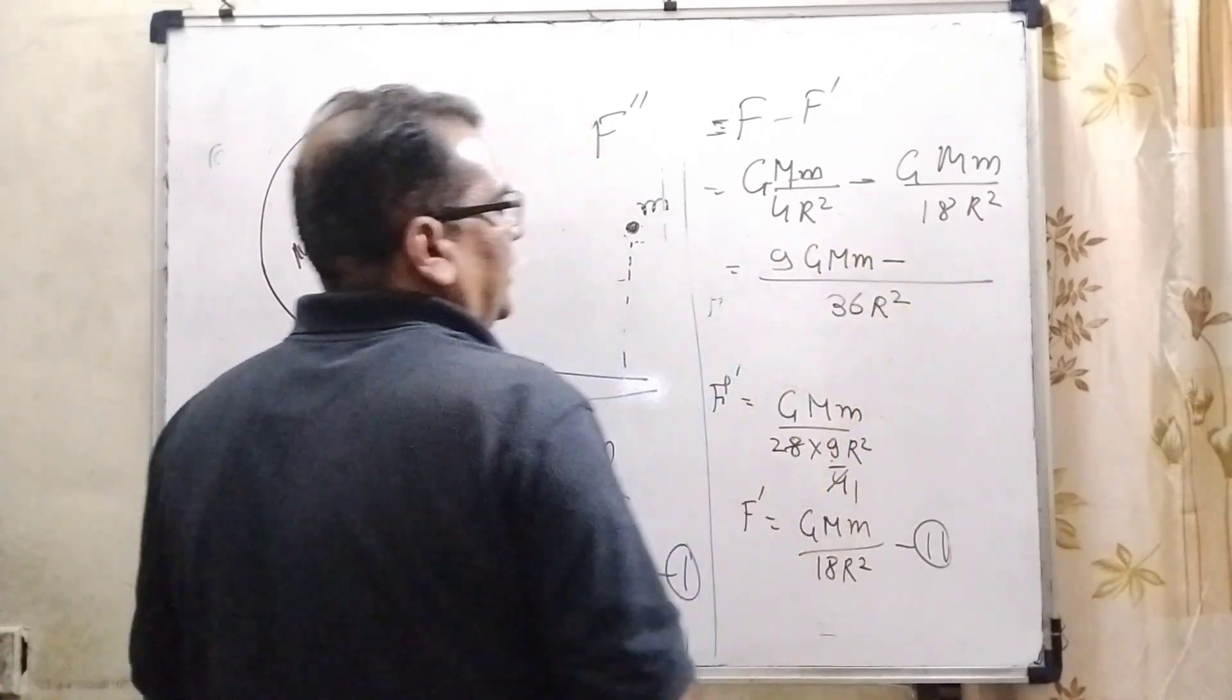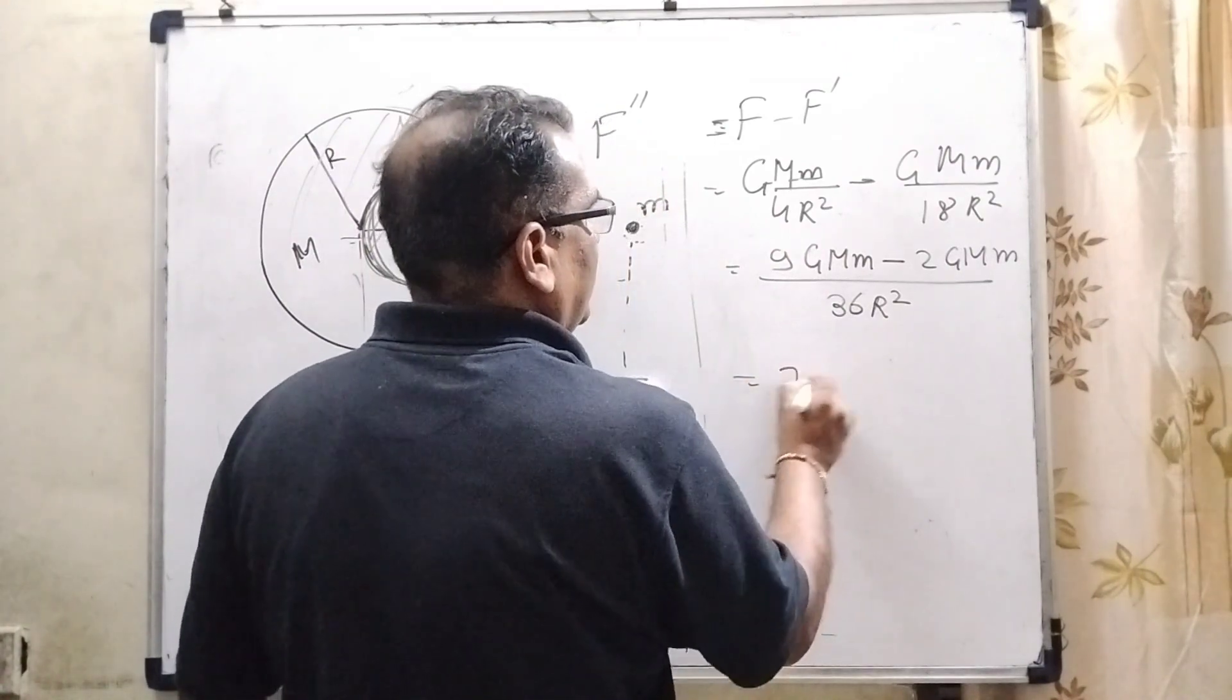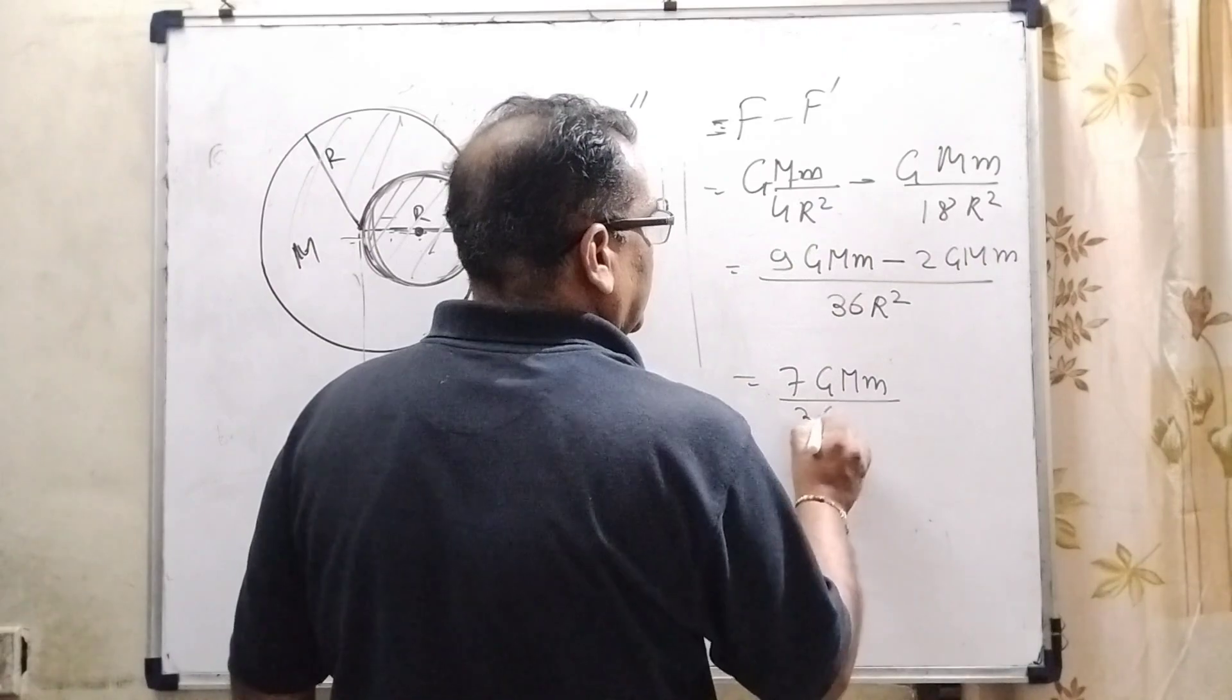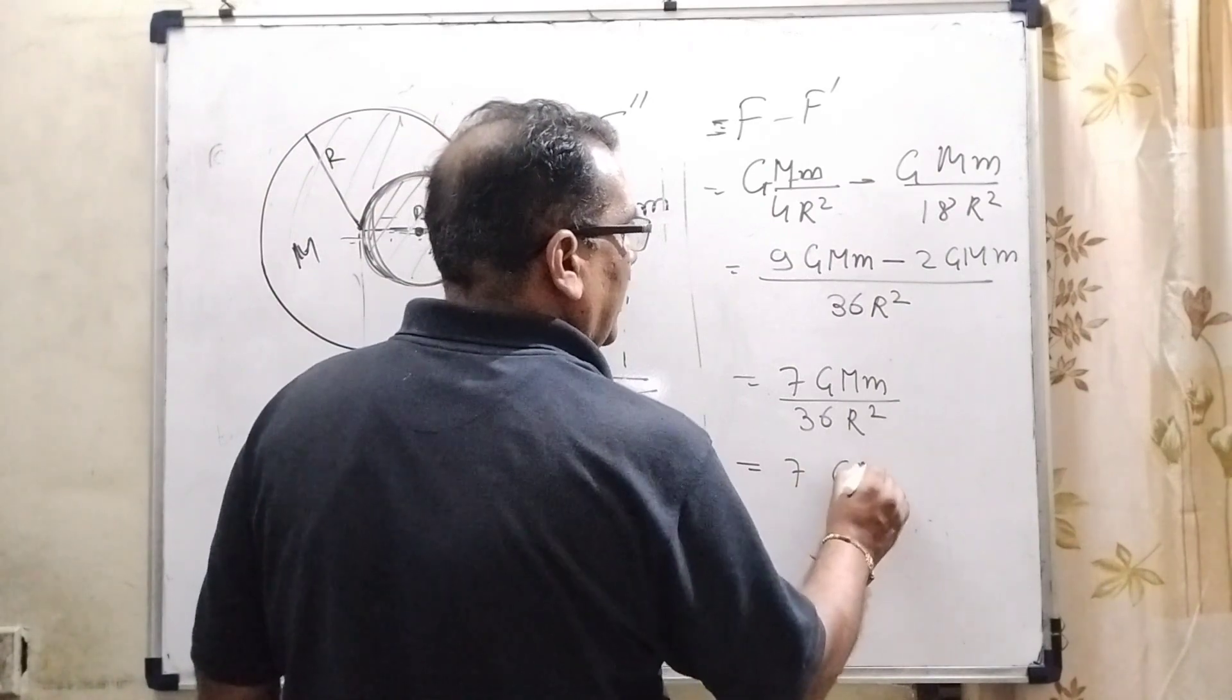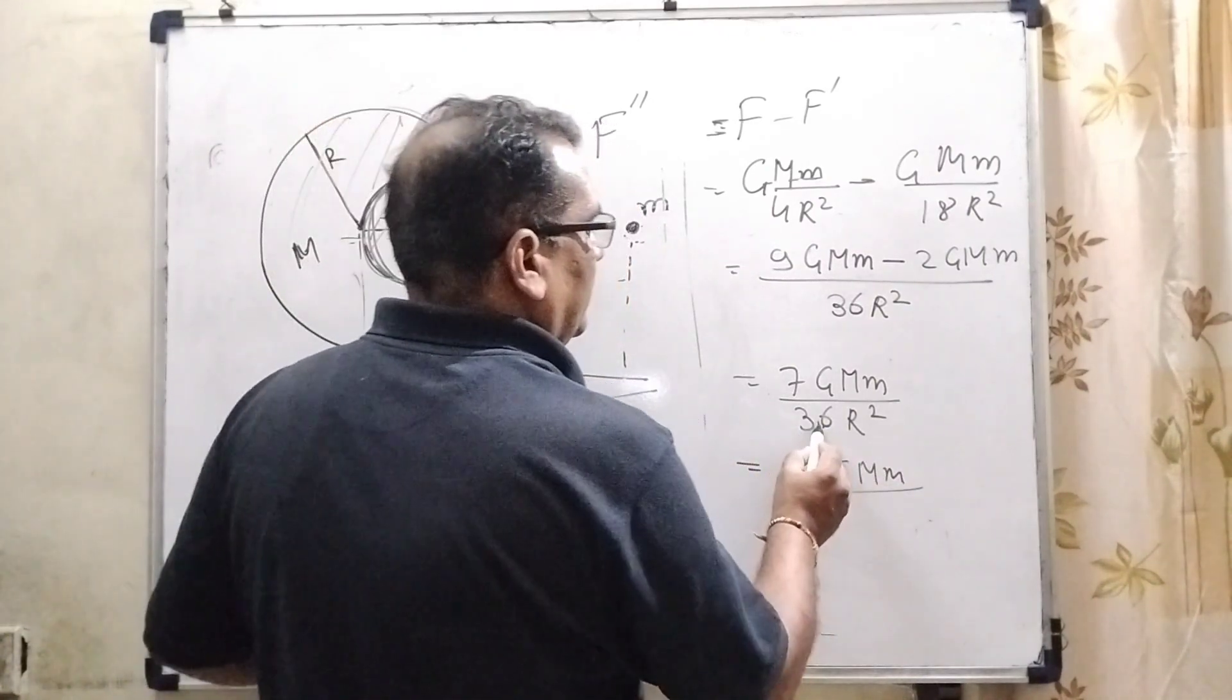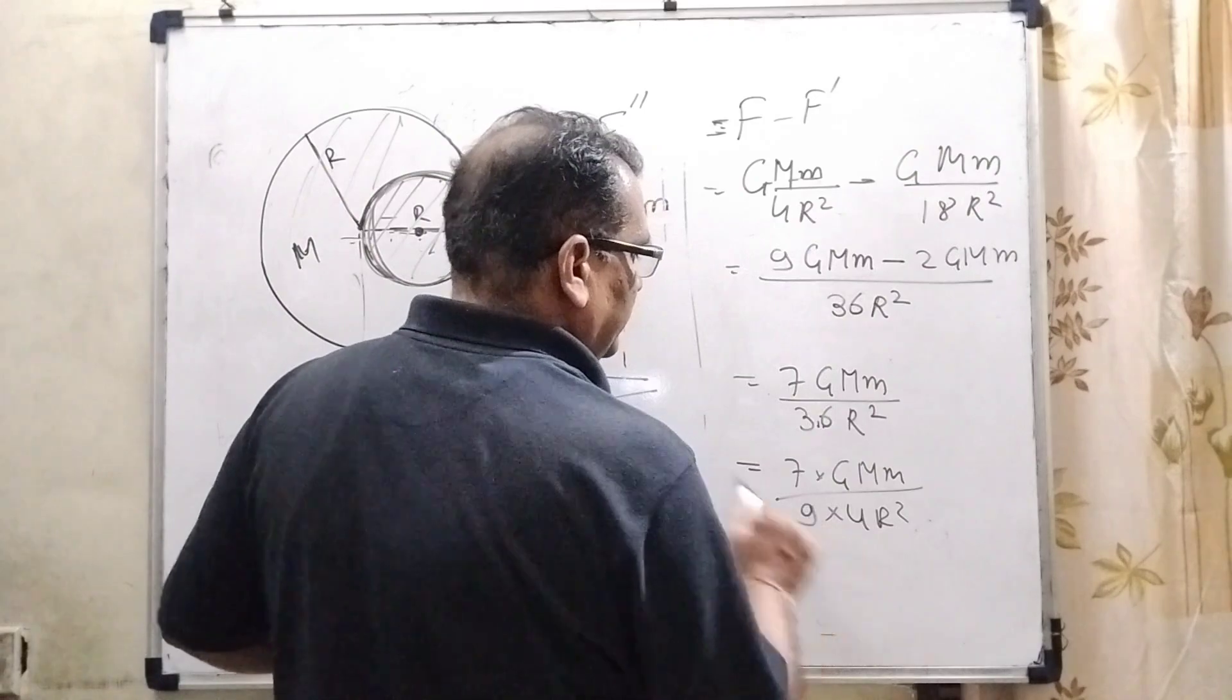F double dash equals 18R square. Now it can be rearranged, 7 G M small m. Now it can be written as 4 nines are 36. So 4R square and it is 9.